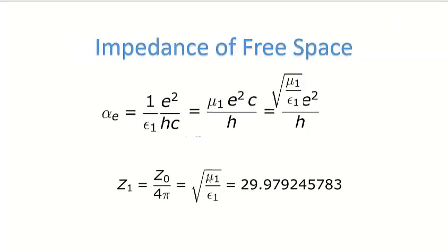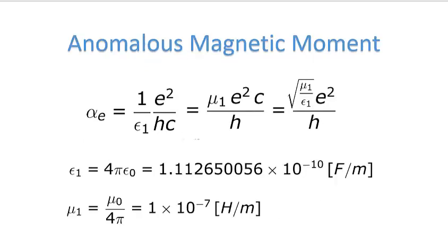We already know the impedance of free space evaluates to a specific value under these conditions. I also want to show that permittivity evaluates to a specific value, and the magnetic constant — permeability — evaluates to exactly 1×10⁻⁷. That's easy to remember. Knowing the relationship between permittivity and permeability, and given the exact speed of light, I can calculate permittivity and the impedance of free space from that single value.